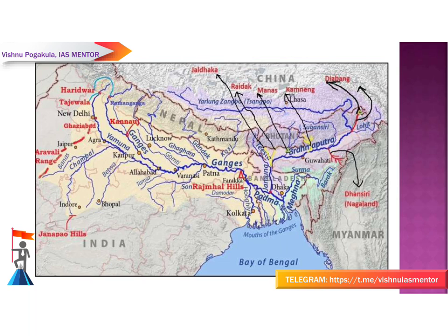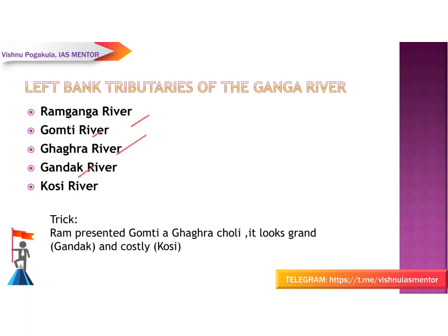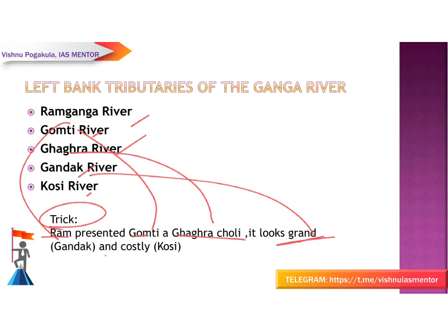Now let's see the left bank tributaries of river Ganga: Ram Ganga, Gomti, Ghagra, Gandak, and Kosi. The trick to remember these is: 'Ram presented Gomti a Ghagra Choli, it looks grand and costly.' So Ram is for Ram Ganga, Gomti is for Gomti, Ghagra Choli gives Ghagra, grand gives Gandak, and costly gives Kosi.